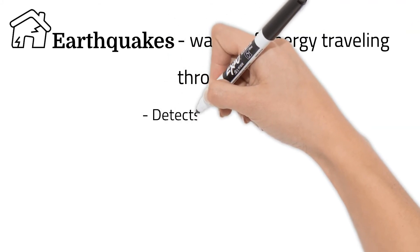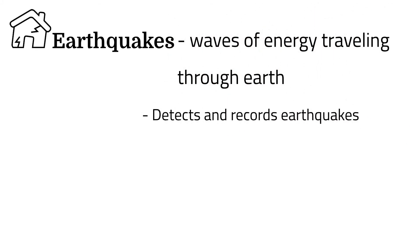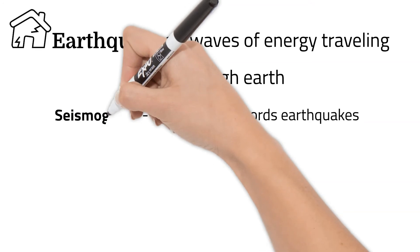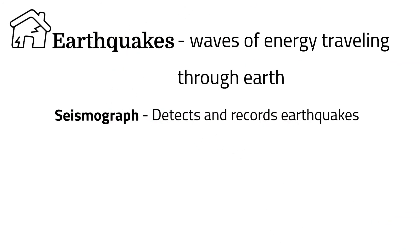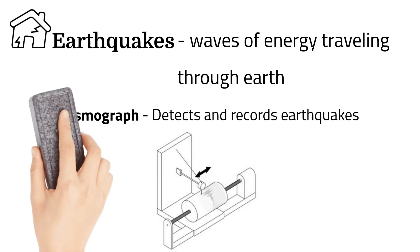Seismologists detect and record earthquakes using a device called a seismograph. A pen hangs over a rotating drum covered in paper. When there is an earthquake, the pen moves but the drum stays still.